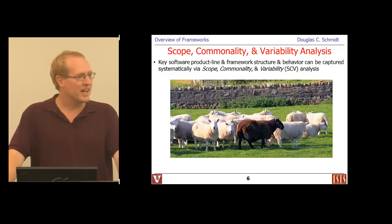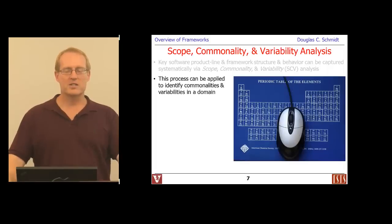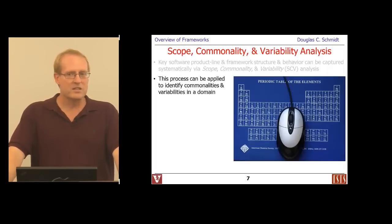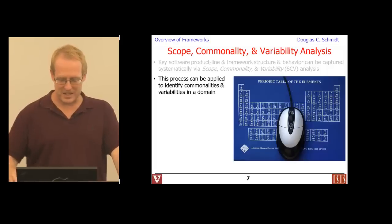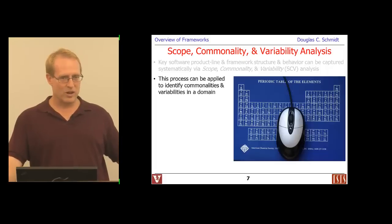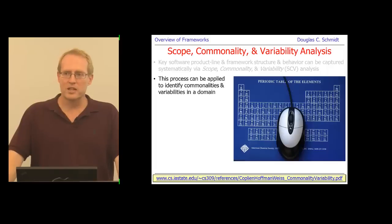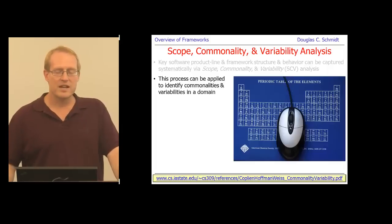You can apply this process to identify commonalities and variabilities within a particular domain. The domain issue is important — that has to do with scope. Let's use the Android libraries or Android frameworks as the scope to make the discussion relevant. There's a good article you can access at the URL in the slides, by some of the early people at Bell Labs who did a lot of work on commonality and variability analysis for systematic reuse infrastructure and product lines.